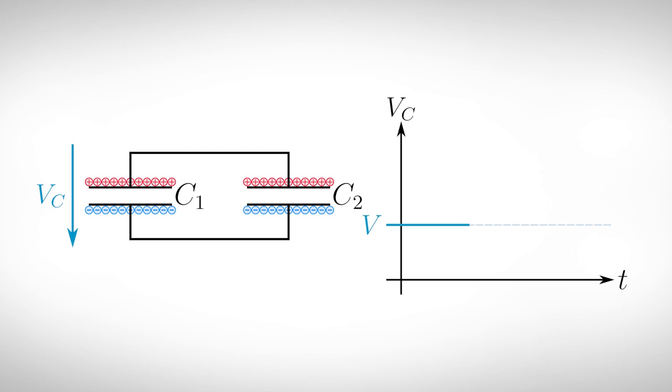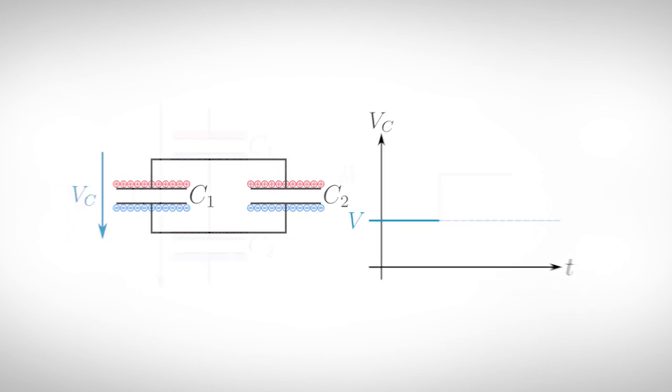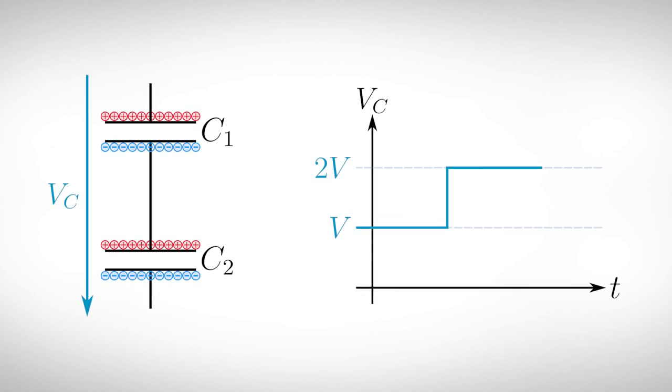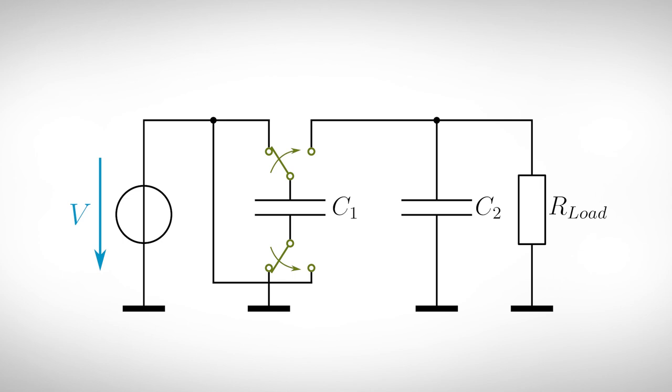Another idea is to fully charge two capacitors with the same capacitance in parallel. And in the next step connect them in series. The voltage over the two capacitors is now twice the voltage before. Again, we can use two alternating switches to get this voltage doubler.